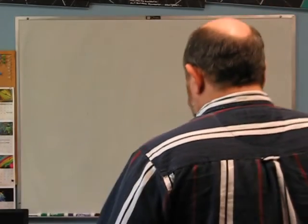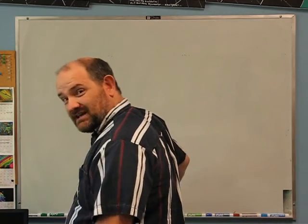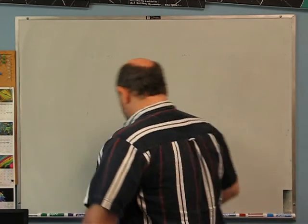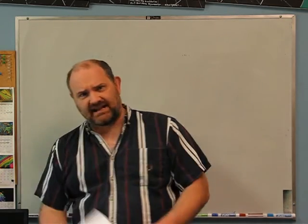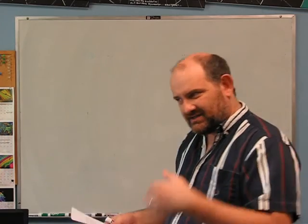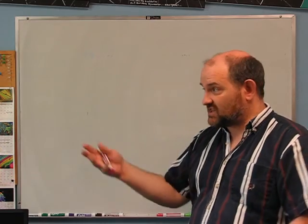Second problem. A hockey puck is sliding on ice — ice means basically no friction. There's a magnetic field pushing this hockey puck around somehow; we'll talk about how that might work next semester. At t = 5 seconds, the hockey puck is moving due north at a speed of 3.5 meters per second.